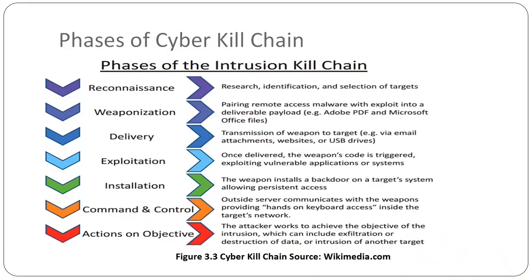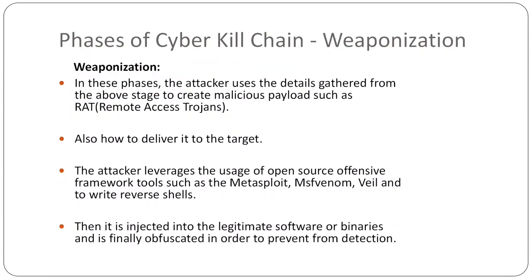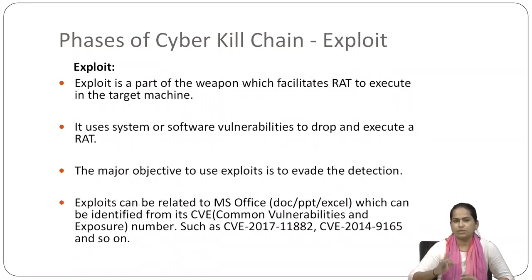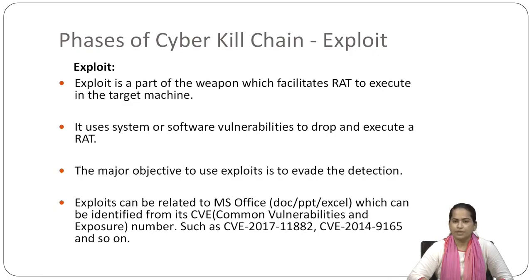Whatever output we get from weaponization will be the input of the third step, which is exploit. An exploit is a part of the weapon that facilitates a RAT — Remote Access Trojan — chosen to execute in the target machine. It uses system or software vulnerabilities to drop and execute a RAT.